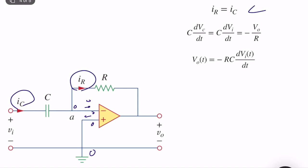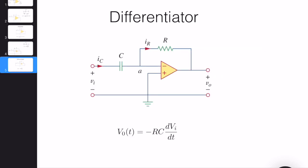So what is IC? IC is equal to C dVC over dt, and this is VC, which is equal to C dVi over dt, because Vi minus zero is technically VC. It's kind of obvious to see that. It's equal to the current in this direction, which is equal to minus V0 divided by R. So if we reorganize, as you can see, V0 or V0(t) is equal to minus RC, a constant times dVi over dt. So what is this? It's a differentiator.